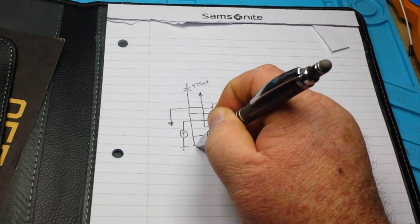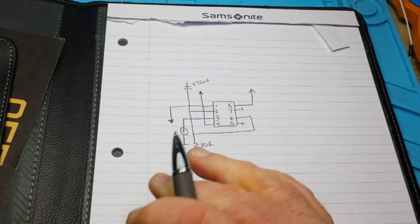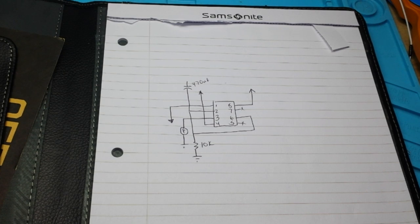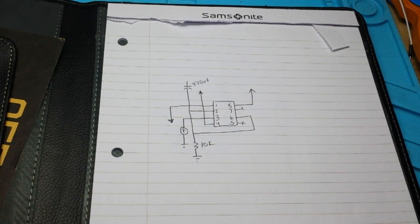And then we're going to have a resistor here going to ground. In this case we're using 10k. This is going to give us a 4 or 5 second delay. Play with the values that you want to get the delay that you want.